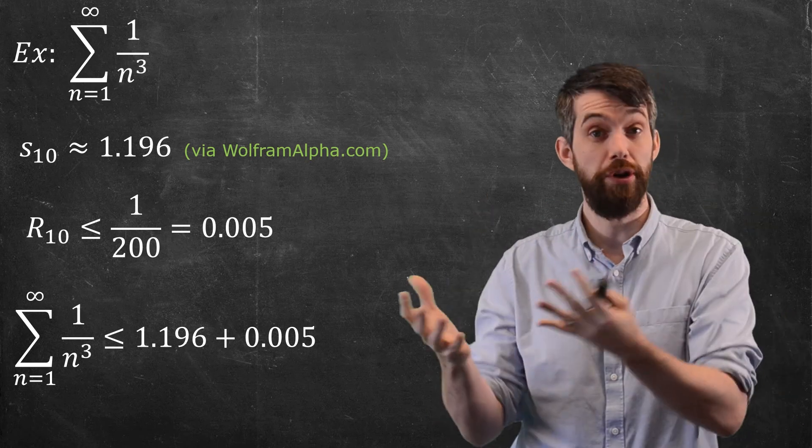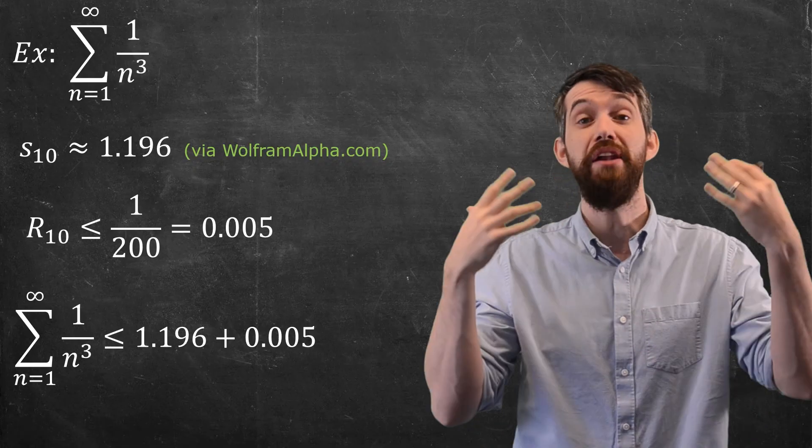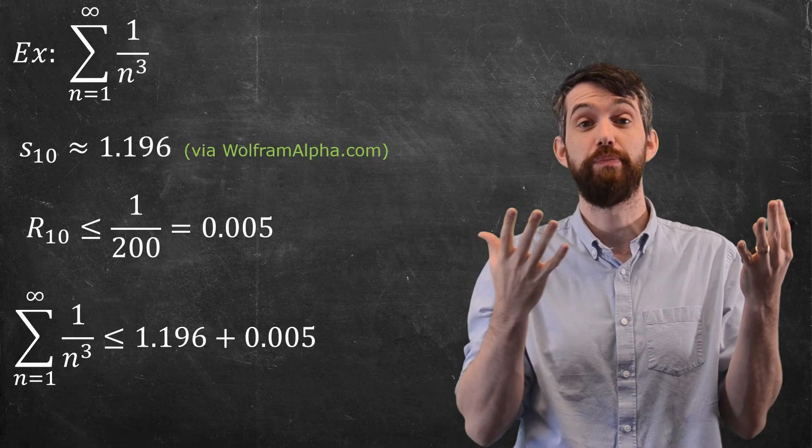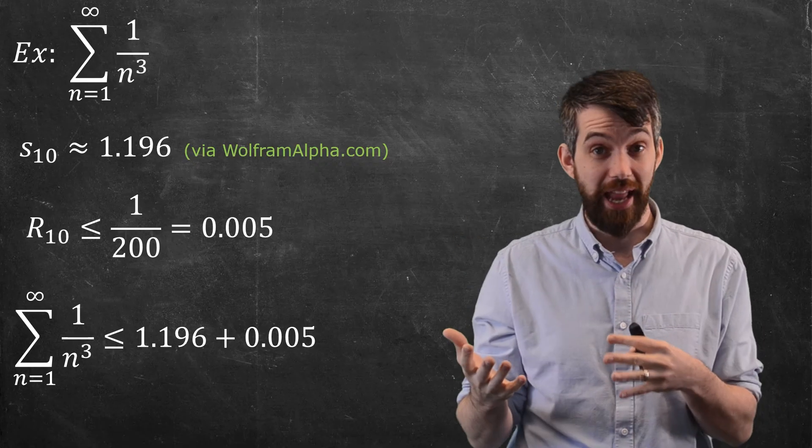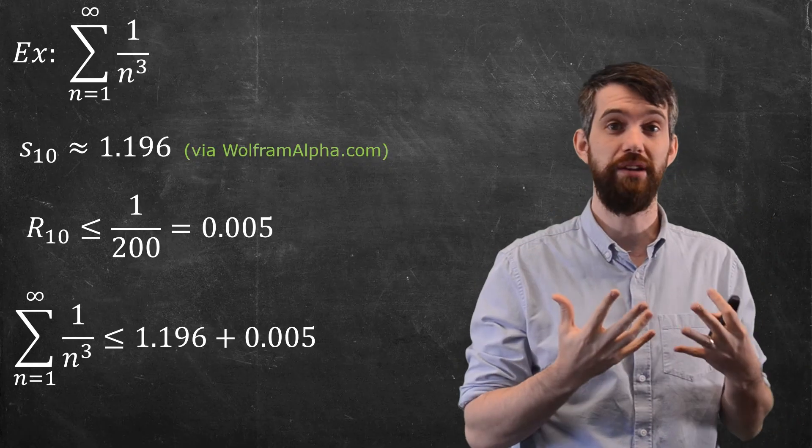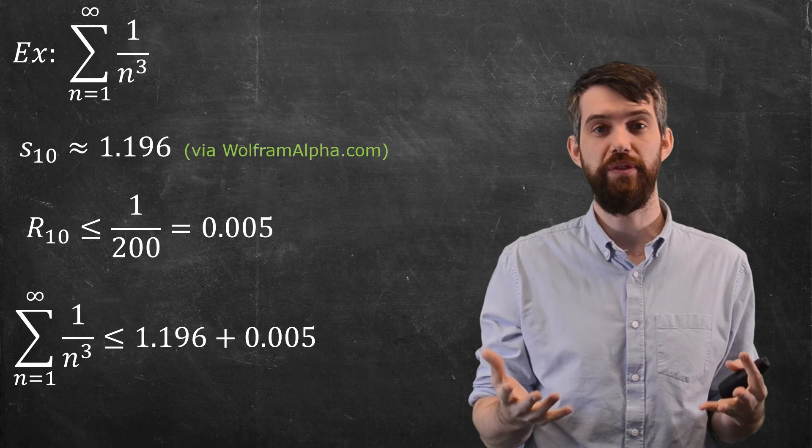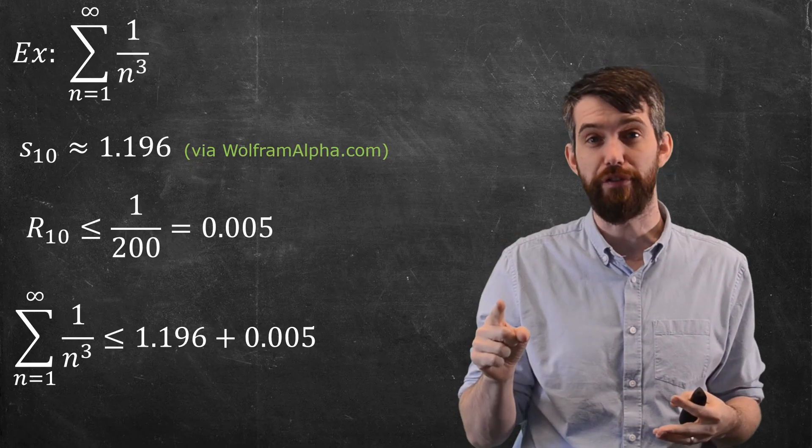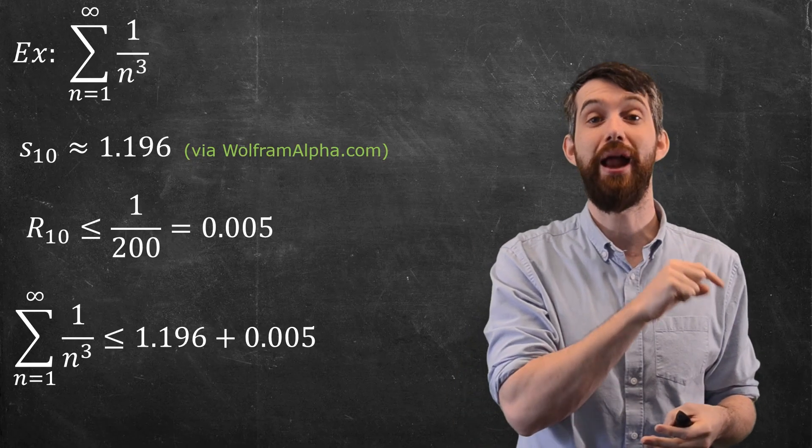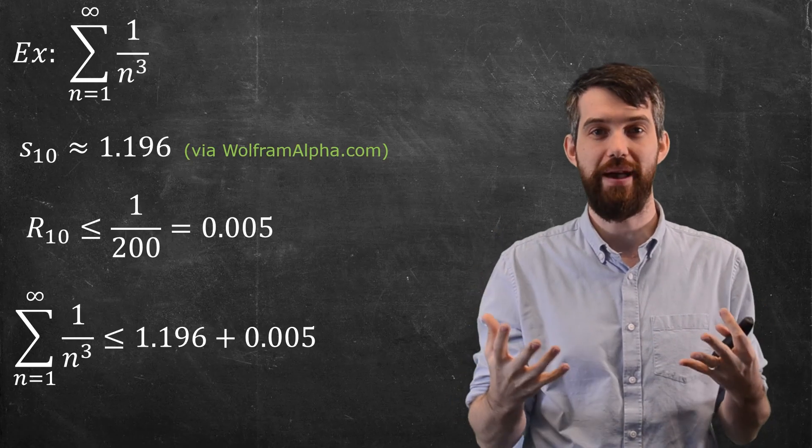Whether that was good enough for your specific application would depend on what kind of uncertainty or error was permissible. But if you didn't like it, you could go better. Instead of computing S10, you could compute S100, S1000, S1 billion if you had a really fast computer. Your remainder would get substantially better as well, so you could get as accurate as you pleased with this kind of method.